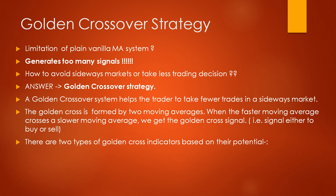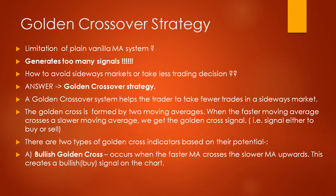Basically there are two types of golden crossovers. The first is the bullish golden cross, which occurs when the faster moving average crosses the slower moving average upwards. This creates a bullish or a buy signal in the chart.